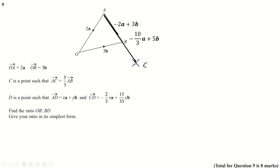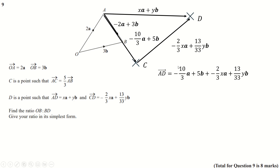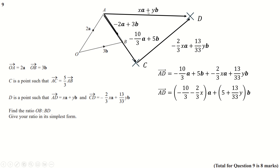D is the point such that AD equals xa plus yb. CD is this thing here. Where do we go from here? The classic strategy with vectors is finding two different journeys that describe the same vector. AD is clearly, as they've told us, just xa plus yb, but it's also AC plus CD. So I've written that: AD is not just this boring vector, but this minus 10-thirds a plus 5b thing, plus that thing they told us. We can group this in terms of a and b to make that. We have this alternate description of AD — it's the same journey, so we can replace that in there as well, and we get this.